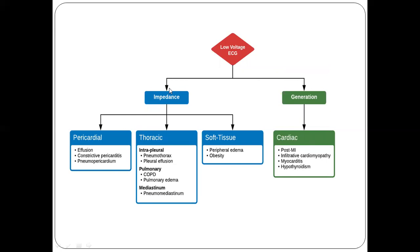To summarize, the causes of low voltage ECG can be either cardiac causes or impedance causes. Impedance causes include pericardial effusion — the most common cause — where fluid increases the distance between the myocardium and chest wall, as well as pneumothorax, pleural effusion, emphysema from smoking causing lung enlargement, and obesity where excess fat between the myocardium and chest wall dampens the ECG signal.